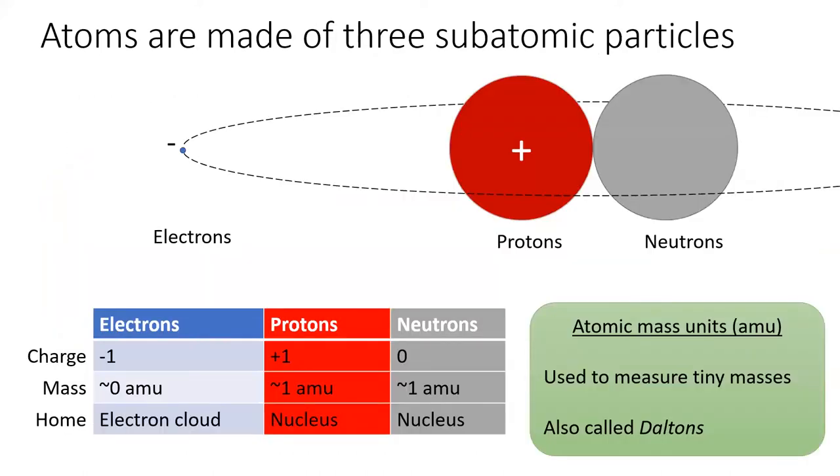Three subatomic particles make up atoms: electrons, protons, and neutrons. The most important properties of these particles are their electrical charge, their mass, and where they live.